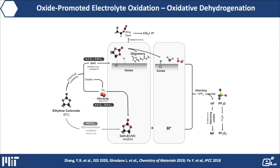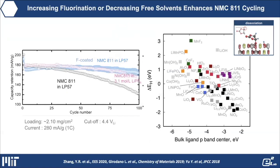Knowing the mechanism, how can we reduce oxidative dehydrogenation? We can control the surfaces or modify the electrolyte. Many groups have shown that coating NMC 811 surfaces with alumina or fluoride-containing compounds is effective. From our descriptor, going from highly covalent cobalt monoxide to fluoride-based cobalt or nickel compounds dramatically reduces the driving force for hydrogen adsorption, meaning much reduced oxidative dehydrogenation. This is in agreement with enhanced cycling stability observed for fluorine-coated NMC 811.